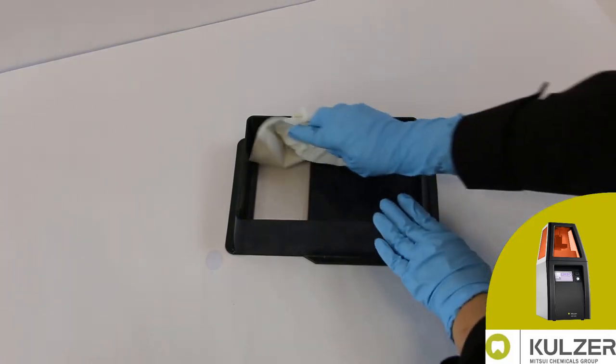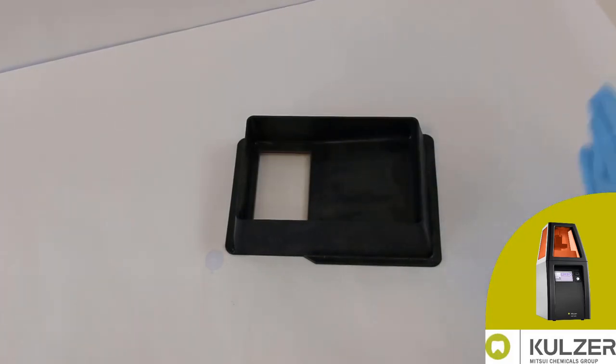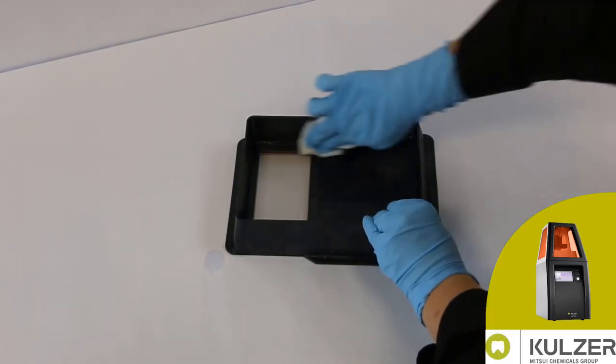If necessary, remove the remaining drops of isopropanol from the surface and dry the remaining parts of the tray.